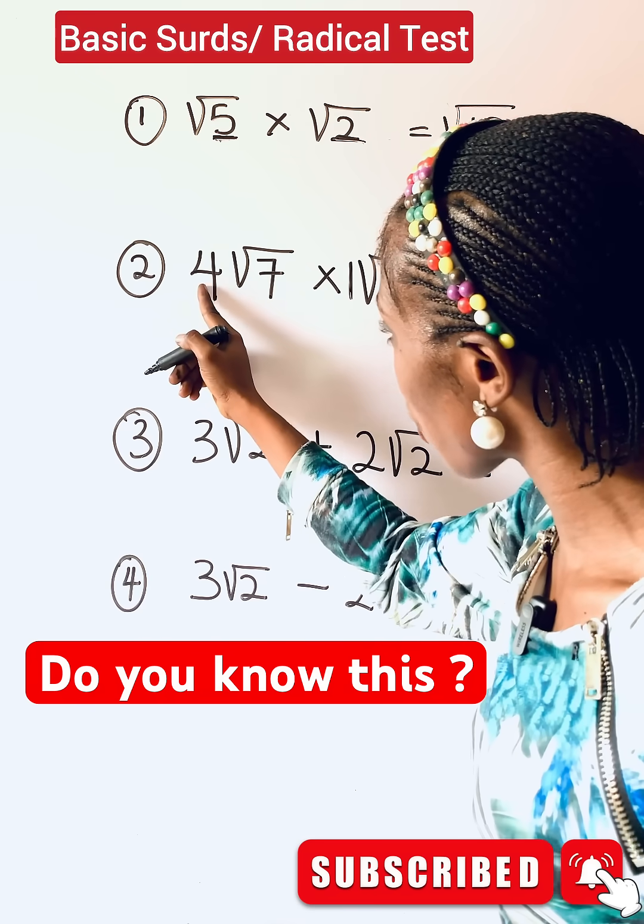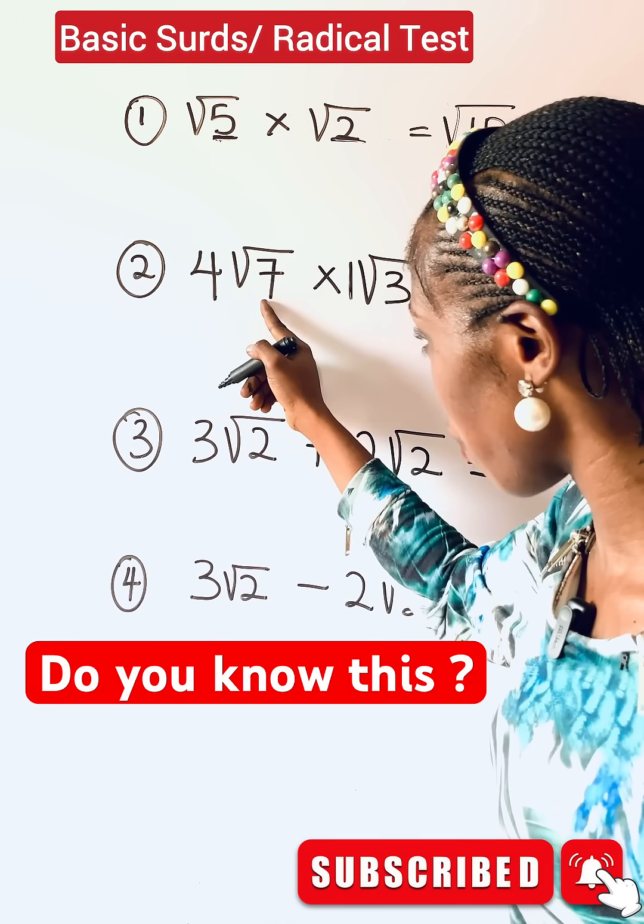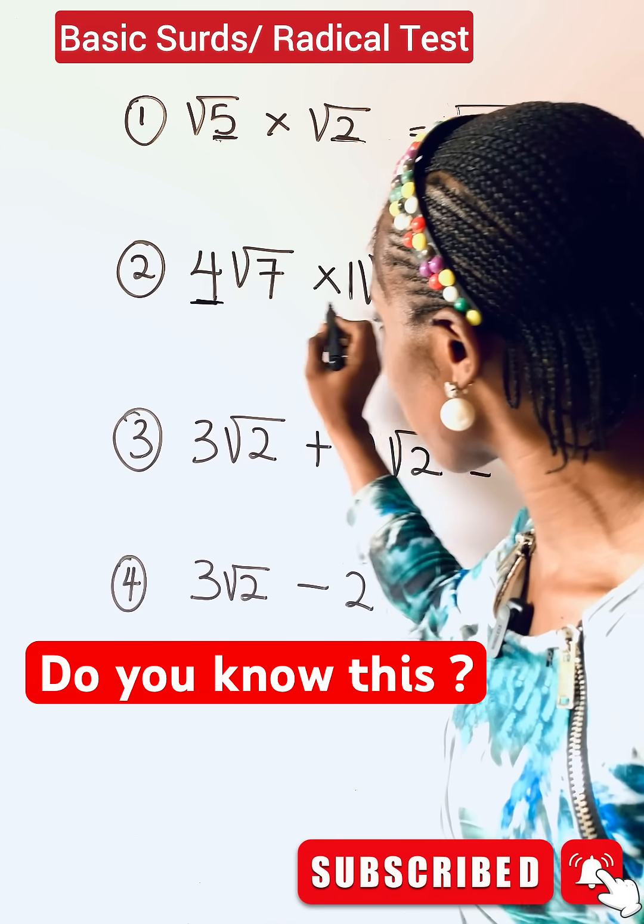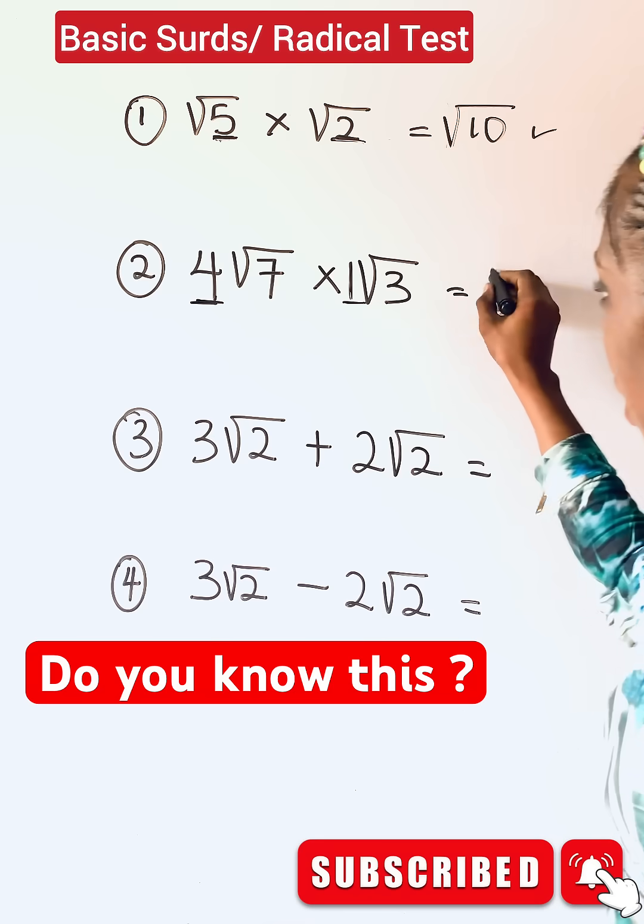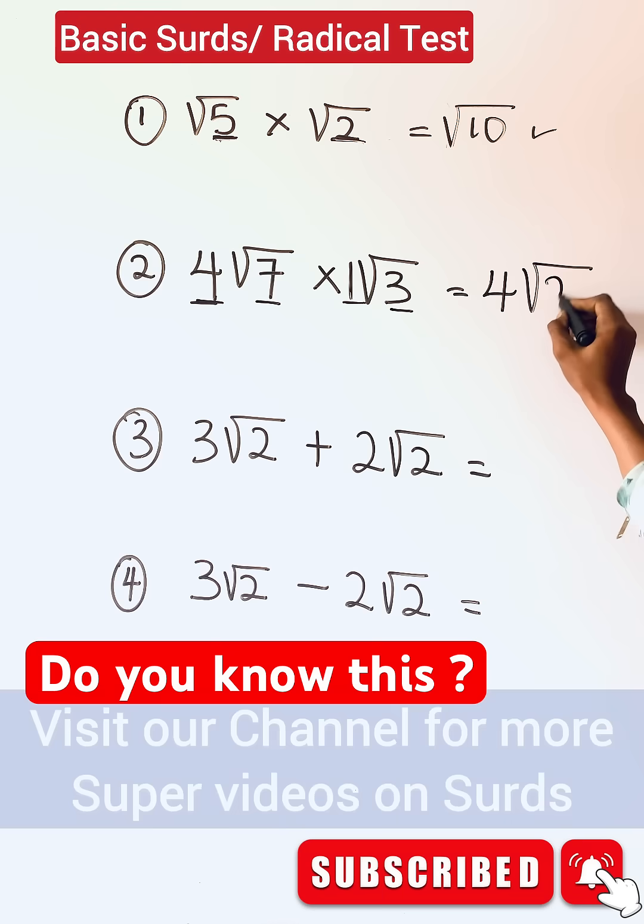Remember, the coefficient of this one here is 1. The coefficient is the number multiplying the radical value. So coefficient versus coefficient - 4 multiplied by 1 is 4. Then for the radicals, when you multiply them it gives you √21.